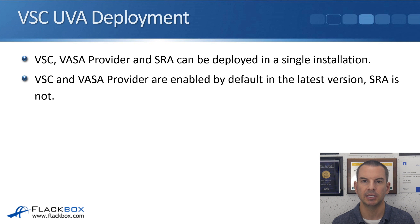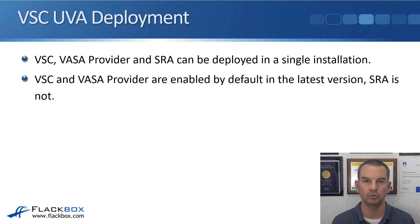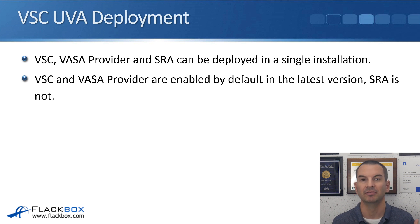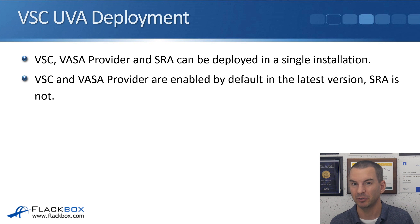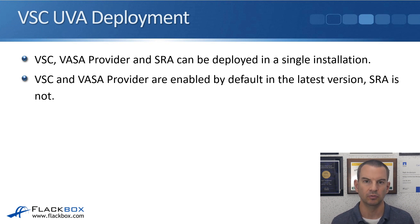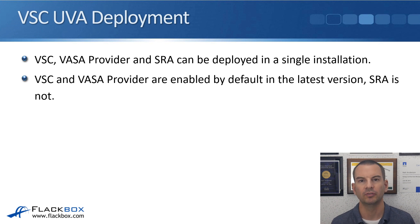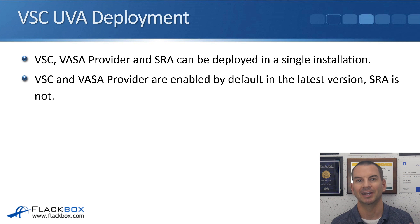A note about terminology: the VSC has been available for quite a long time, and when people talk about the VSC, they may also be talking about the UVA. If you hear a NetApp storage engineer talking about the VSC — the Virtual Storage Console — in general they're talking about the VSC, the VASA provider, and the SRA all rolled into one, which is the UVA. The UVA is the OVA file which includes all three rolled together, while the VSC is a component of the UVA. In general conversation, we just call the whole thing the VSC.